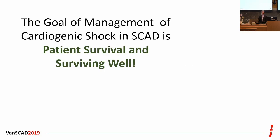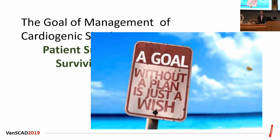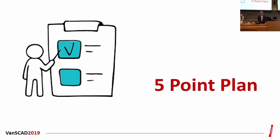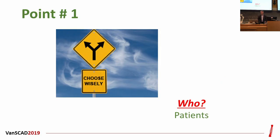When we talk about cardiogenic shock, the goals are simple: you want to make sure the patient survives, and survives well. I'll give you 5 points to describe how we approach a patient coming in with cardiogenic shock in this population. Point number one is: who is the patient? How do I identify a patient in cardiogenic shock? How do you know when this patient is in trouble?